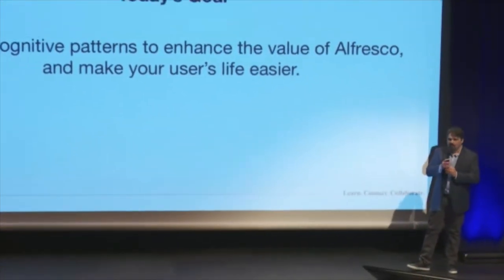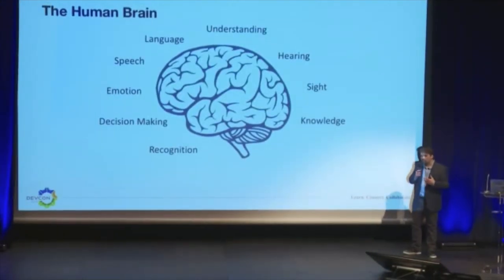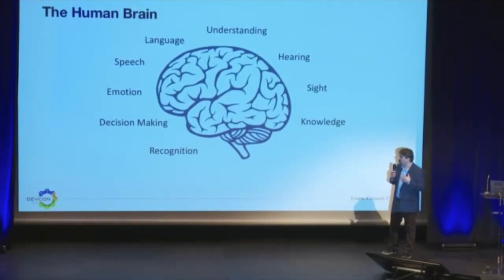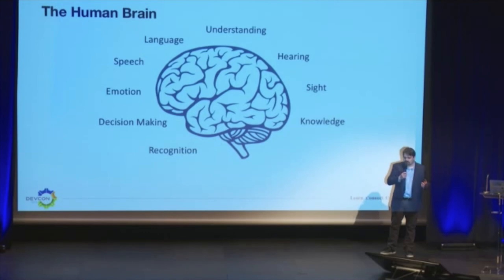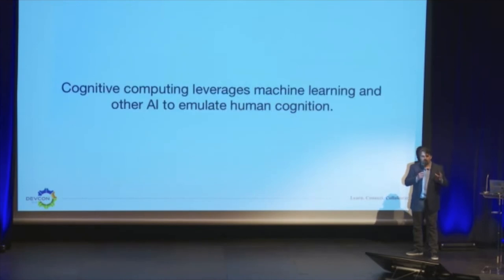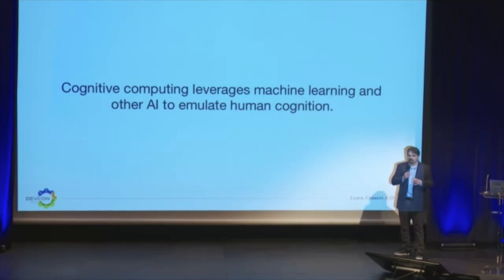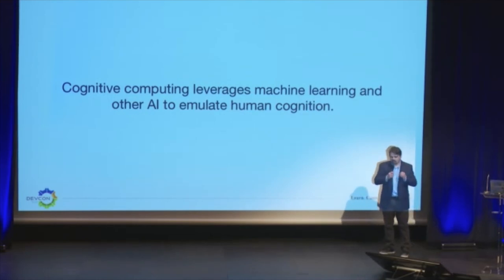Now to do that, first we want to talk about what it means — cognition, what is cognitive. These are all the kinds of things that we all know every day. We all have understanding, we hear, we see, we have emotion, we make decisions. When you think about that in terms of cognitive services, cognitive computing really just tries to emulate human cognition — it tries to make the same kind of decisions or rules.